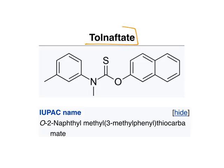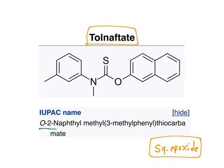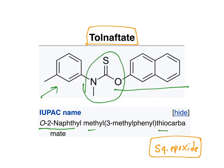Tolnaftate inhibits squalene epoxidase; when squalene epoxidase is inhibited, squalene levels increase causing toxicity to the cell. For its IUPAC name: O-(2-naphthyl) at the second position with an oxygen-naphthyl group, then methyl thiocarbamate, and a 3-methylphenyl group. Breaking it down into individual rings makes naming easy.